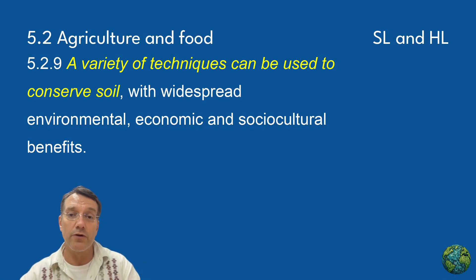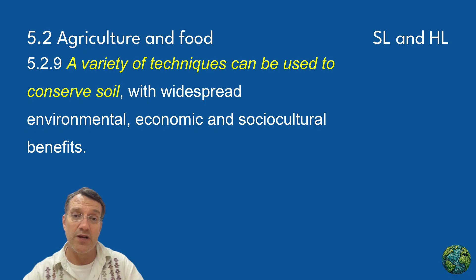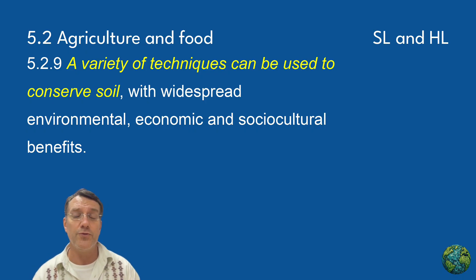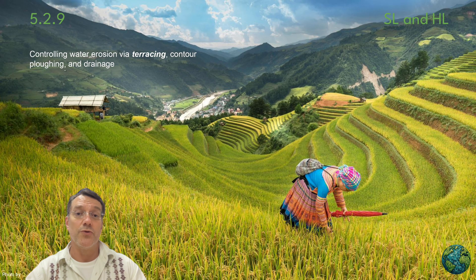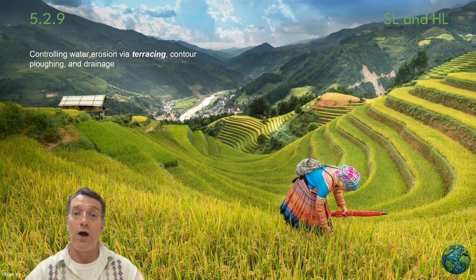A variety of techniques can be used to conserve soil, bringing widespread environmental, economic, and sociocultural benefits. Soil conservation is important because soil formation is an extremely slow process — it can take hundreds of years to form just a few centimeters of topsoil, but erosion can remove it all in a single storm. This dramatic landscape shows terracing, one of the most effective methods for controlling water erosion on slopes. Terraces slow water flow, allowing it to soak into the soil rather than washing the soil away. When combined with contour plowing and proper drainage, this technique can make steep slopes very productive while preventing erosion.